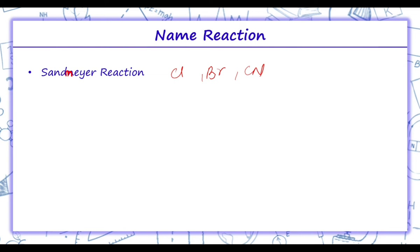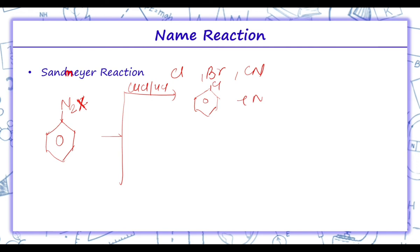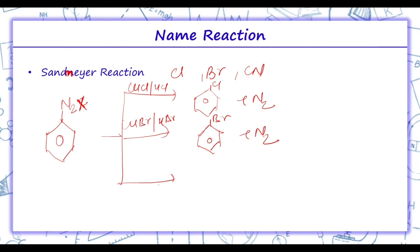Here we have benzene diazonium chloride which is N2X. First, if we are taking CuCl with HCl, we will get chlorobenzene plus N2. If we are taking CuBr in HBr, we will get bromobenzene plus N2. And if we take CuCN in HCN or KCN, we will get cyanobenzene.